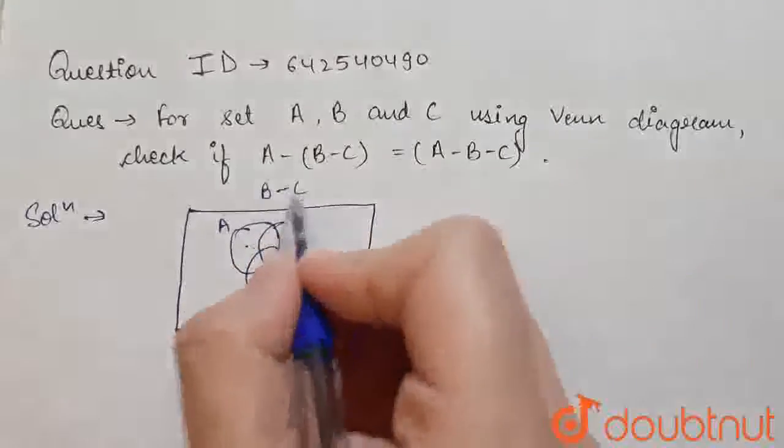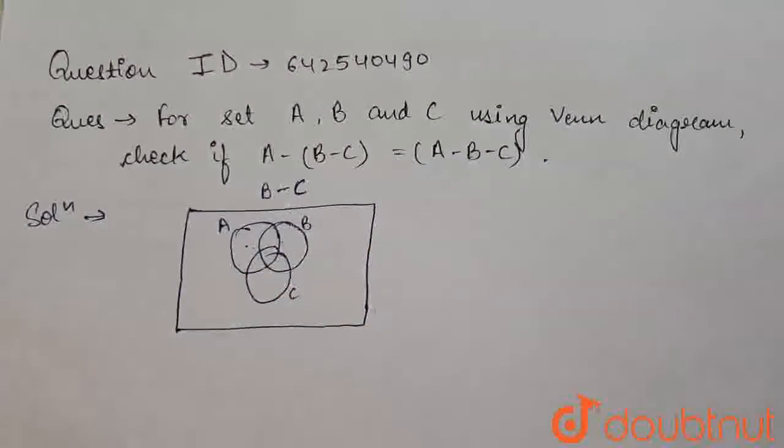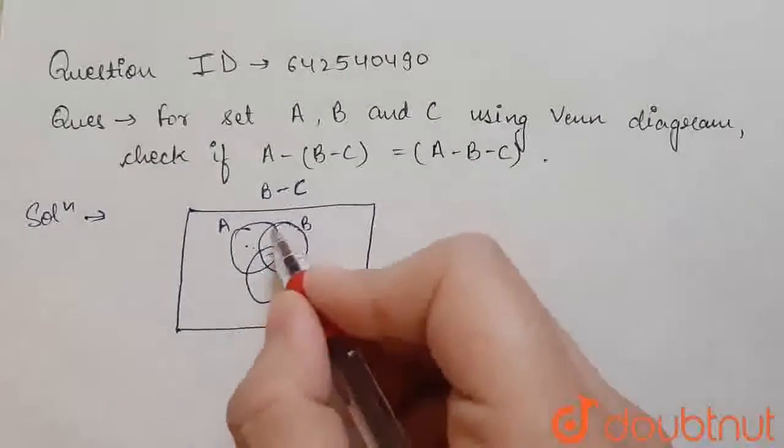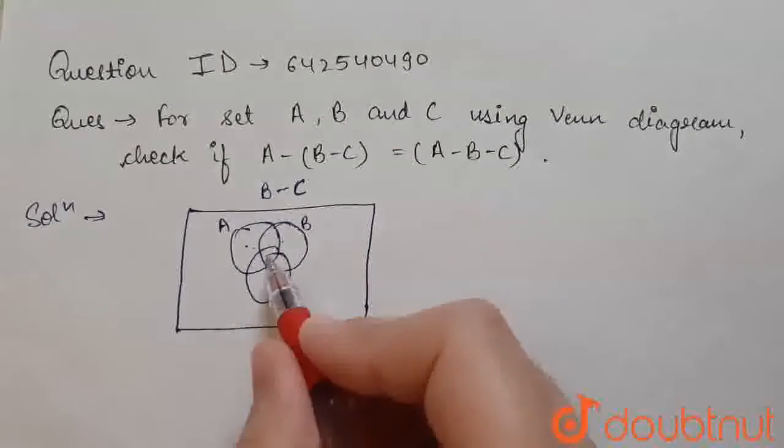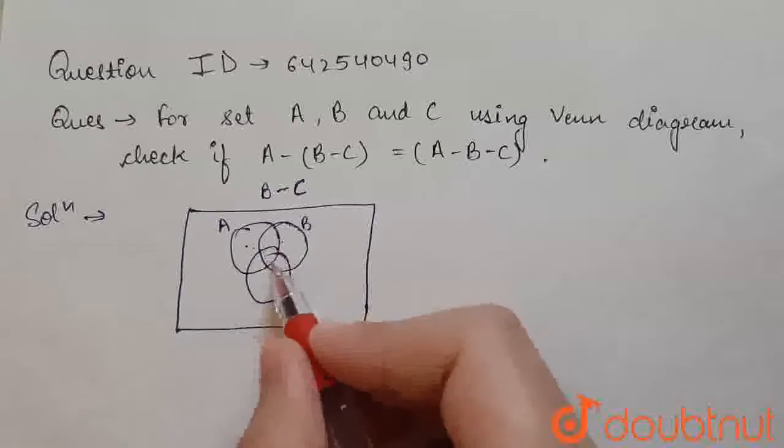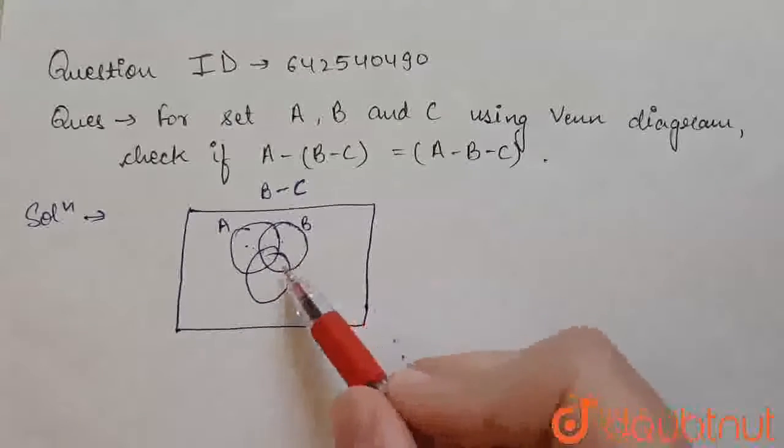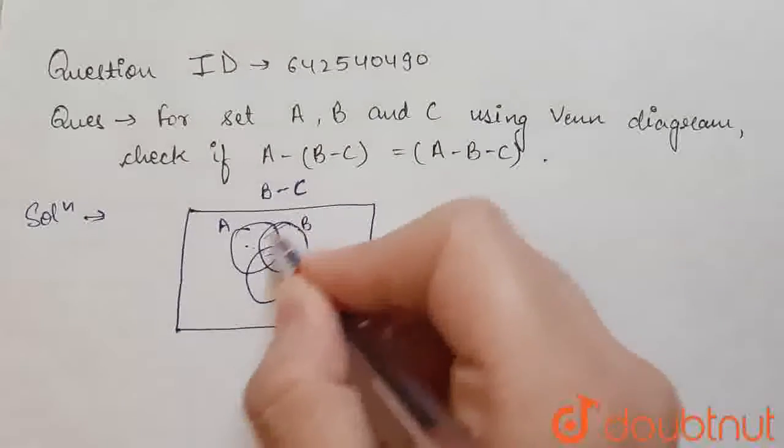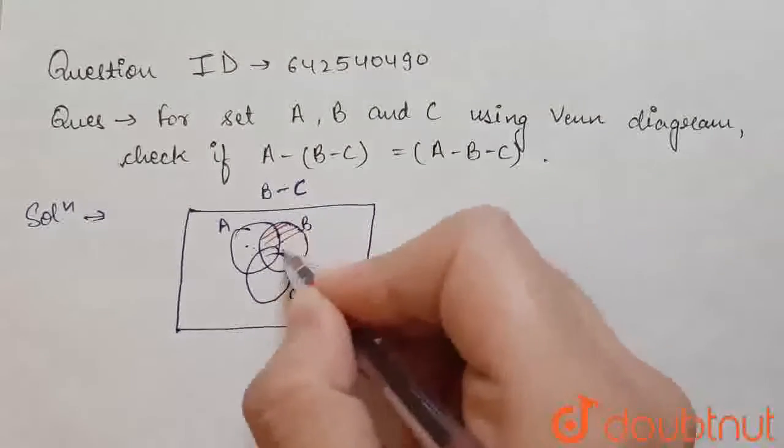I am going to calculate B minus C firstly. So, B minus C is B minus the intersection of B and C. I have to subtract the intersection of B and C from B. So, the part that is left to us is this.